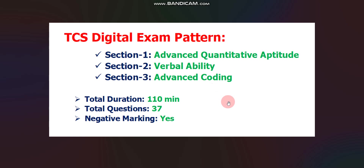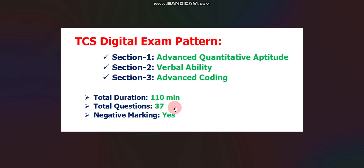Now let's move to the exam pattern. There will be a total of three sections in the online exam. Section one will be Advanced Quantitative Aptitude, section two will be Verbal Ability, and section three will be the Advanced Coding round. Please note: for sections one and two there will be negative marking, but for section three there will not be negative marking. In total there will be 37 questions and the total time will be 110 minutes.